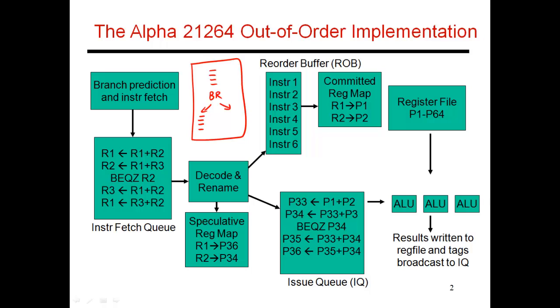My reorder buffer currently contains all of these instructions and also contains these instructions along one of the two paths. My instruction fetch queue may have gone beyond this point and also started fetching the next set of instructions.